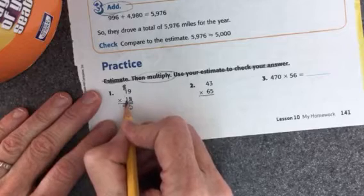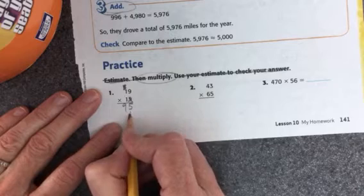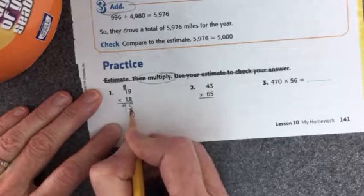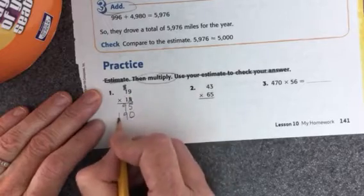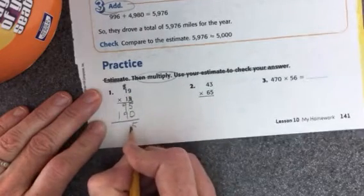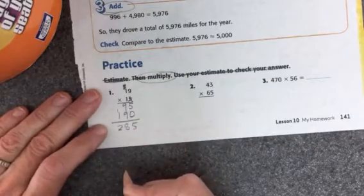And now I'm multiplying in the tens column. When I multiply by a tens number, the number 10, there is a zero at the end. So I'll put the zero here. 1 times 9 is 9, and 1 times 1 is 1. Then I'll add it up. And my answer is 285.